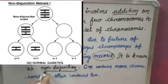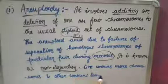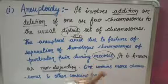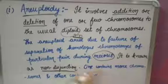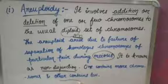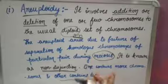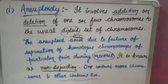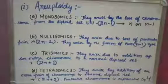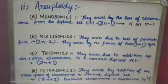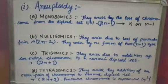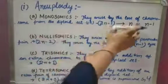Aneuploidy mostly occurs during meiosis when homologous chromosomes cannot be separated. This is known as non-disjunction. It produces two sets of cells: one type has more chromosomes and another type has fewer. There are four types of aneuploidy.